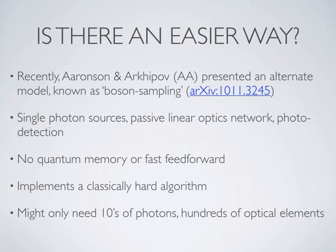Recently, two researchers from MIT — Scott Aaronson and Alex Arkhipov — presented an alternate model for optical quantum computing, now called boson sampling. In this model you need single photon sources, passive linear optics networks, and photo detection — that's all. You do not need quantum memory or fast feed-forward, which is a big distinction from normal optical quantum computing protocols. And despite being much simpler, it still implements a classically hard algorithm. To beat the classical limit, we might only need tens of photons and hundreds of optical elements, as opposed to millions or billions.